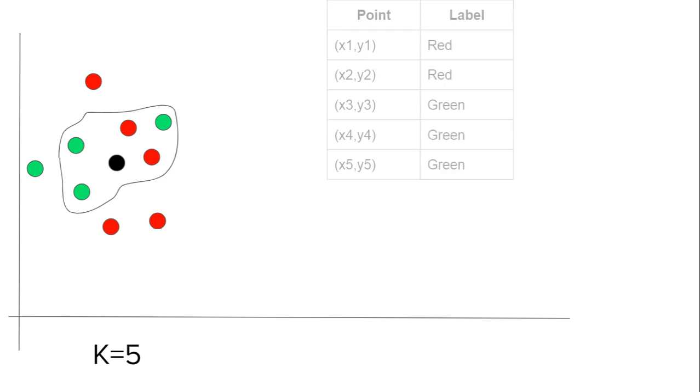So what I will do is create a table for these points - they are already labelled. I have 5 points: x1, x2, x3, x4, and x5, and these are the labels. The nearest two points have a label of red and the next three points have a label of green.